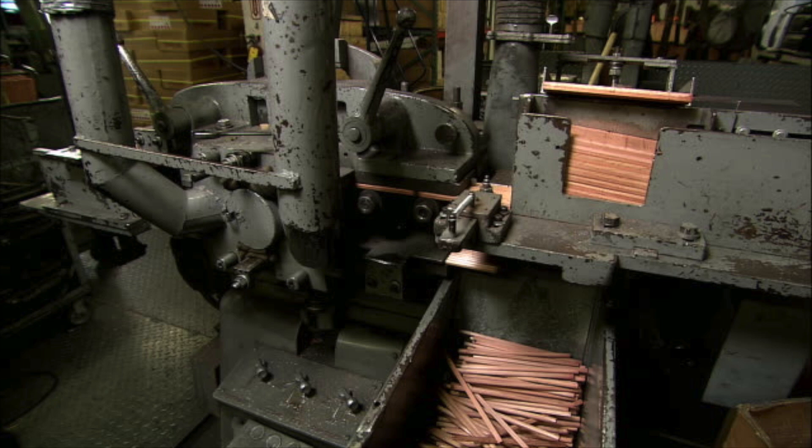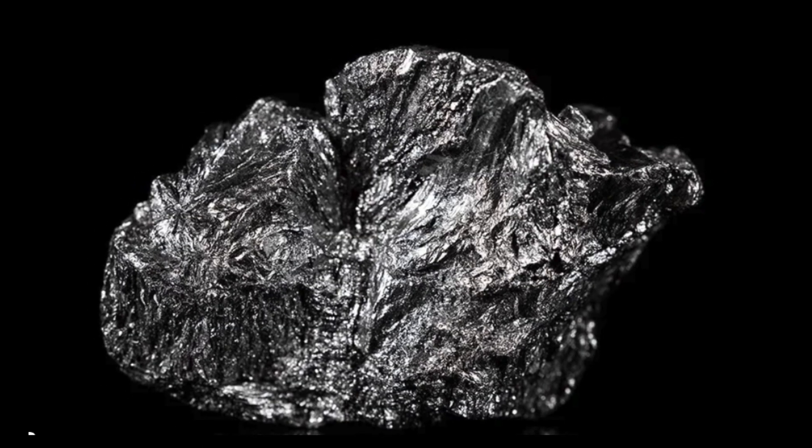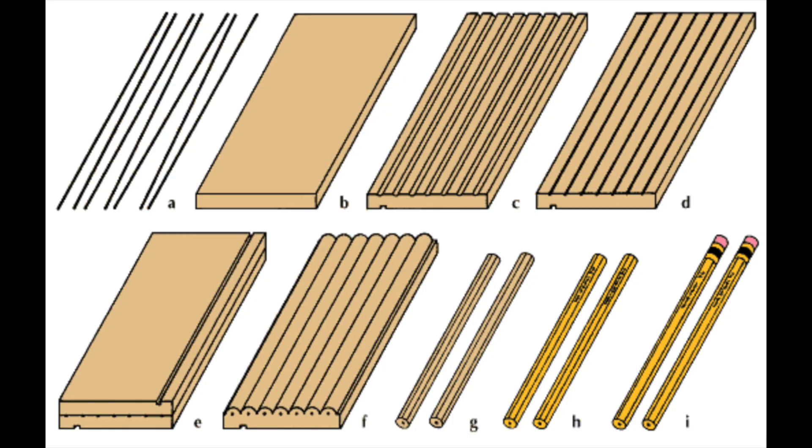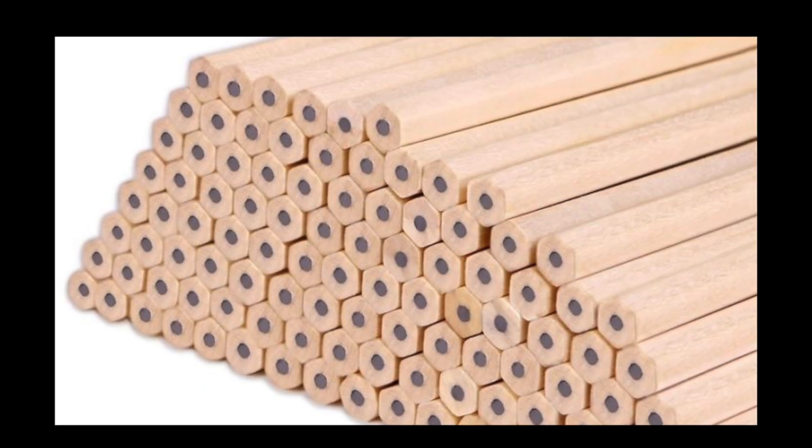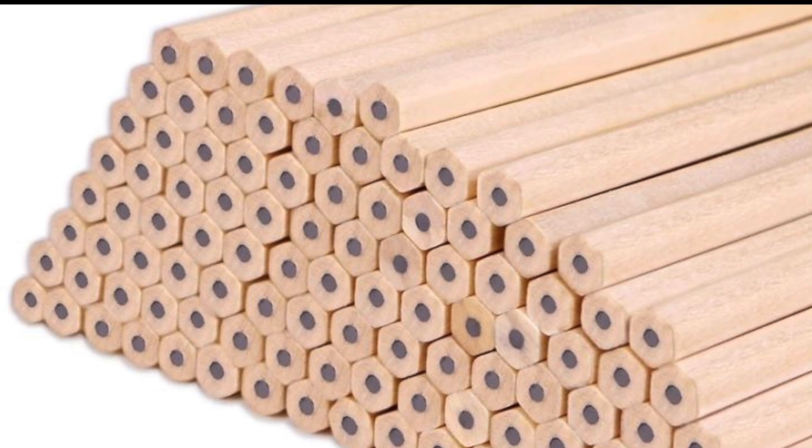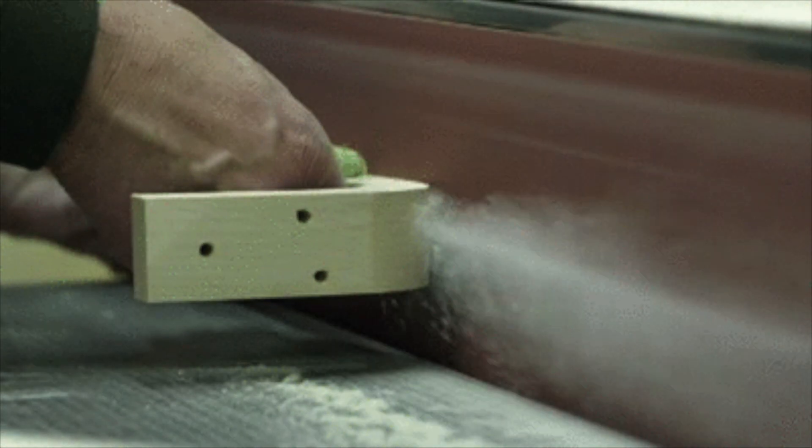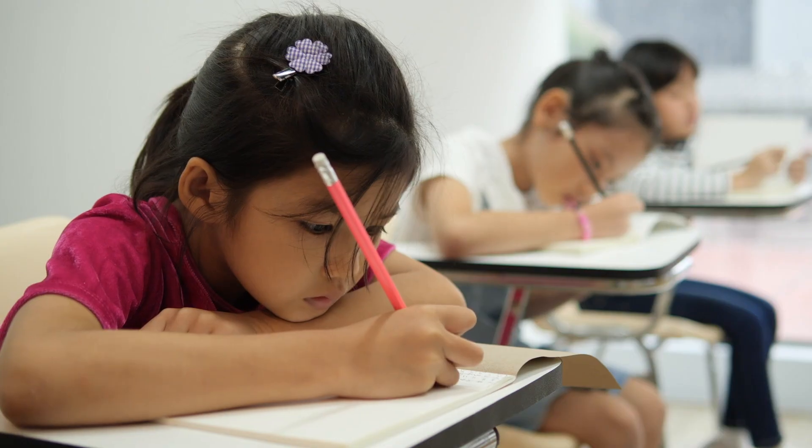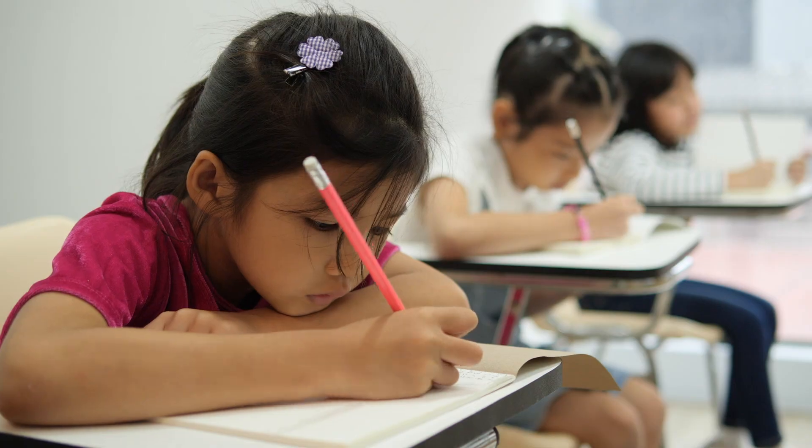Mined from various locations worldwide, graphite undergoes treatments to remove impurities, and a precise blend with clay is crafted to form the pencil's core. The wooden casing is then carefully molded around the graphite-clay mixture, creating the iconic hexagonal shape that prevents the pencil from rolling. The finishing touches involve sanding, coating, and attaching the eraser, ensuring each pencil meets the high standards set by craftsmen.